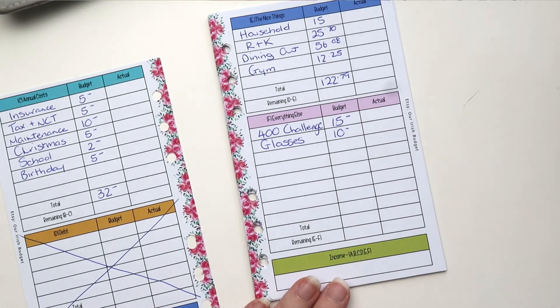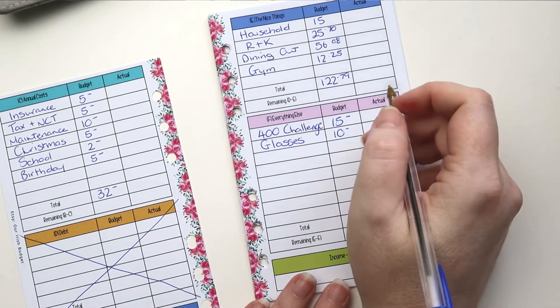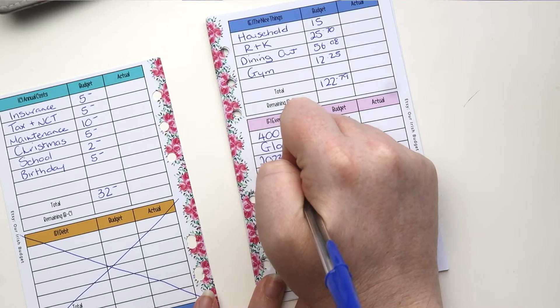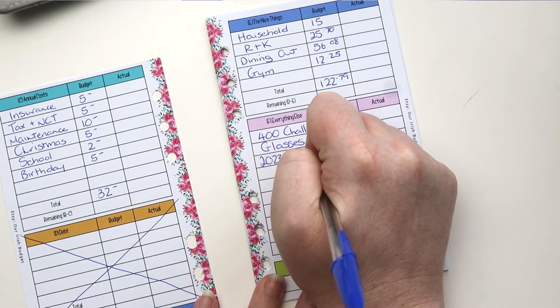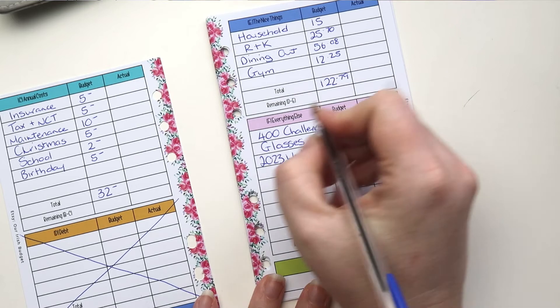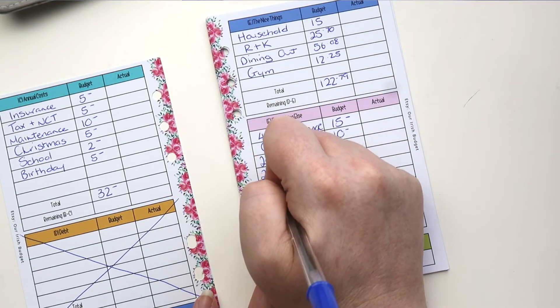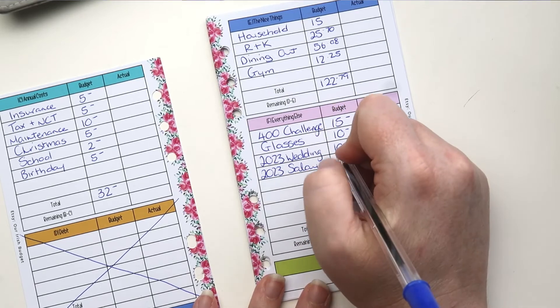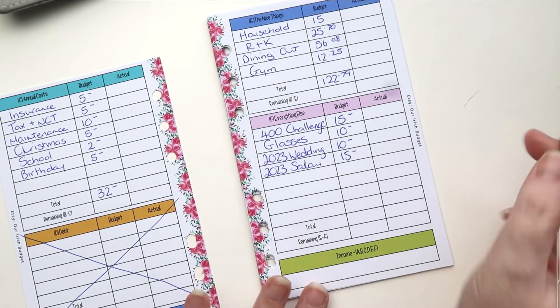Then we have the weddings that we have for next year. 10 euros. And then our holiday for next year is getting 15 euros. And that's it.